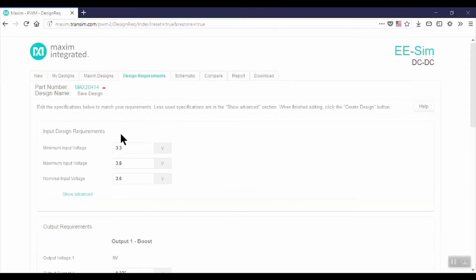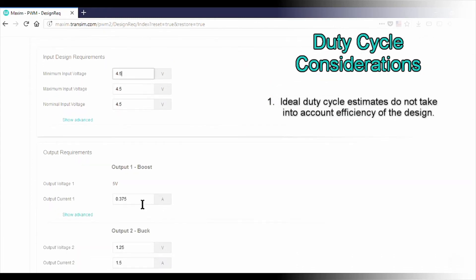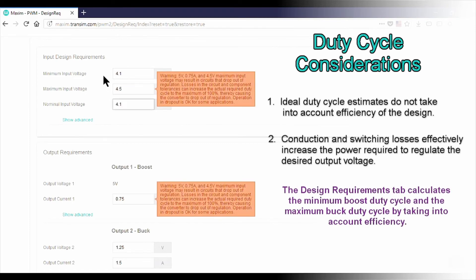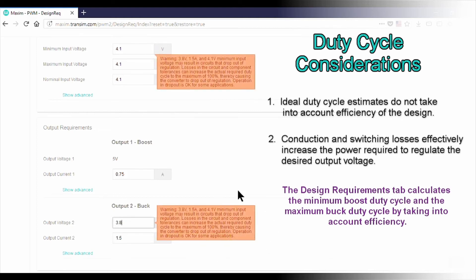The ideal duty cycle equations let you know when you're operating your converter near 100% or 0% duty cycle. However, the ideal duty cycle equations do not include the power loss of the converter. Conduction and switching losses effectively increase the power required to regulate the desired output voltage for your design. The design requirements validation in eSIM lets you know if you'll be operating near the minimum boost duty cycle and the maximum buck duty cycle by taking into account efficiency.